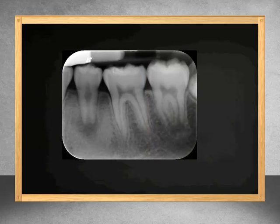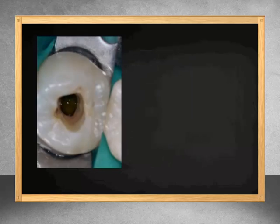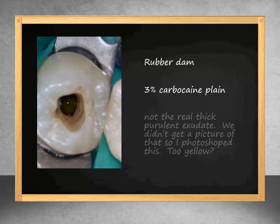In this case, the child had an incomplete apex with a necrotic pulp and periapical disease. At the first appointment, under rubber dam isolation and local anesthetic without epinephrine, the chamber was accessed and a necrotic, purulent exudate was found.